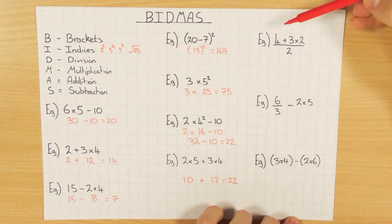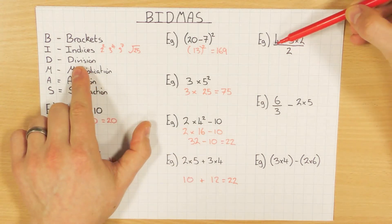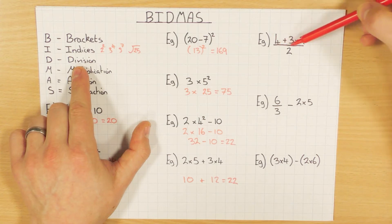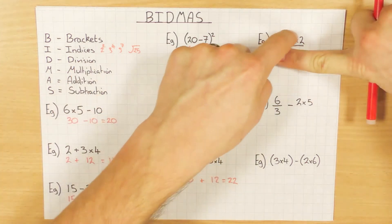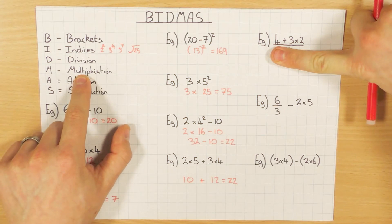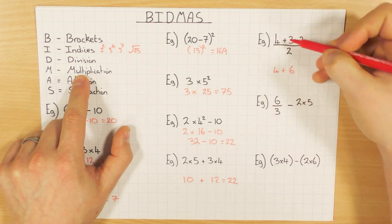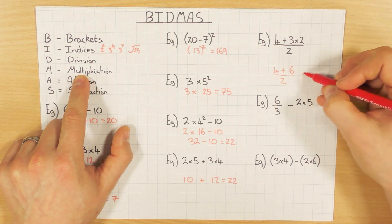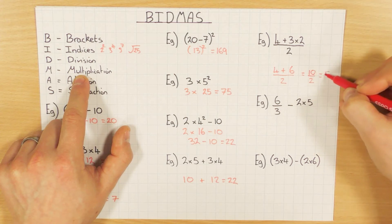This next one is interesting — we've got an addition, a multiplication, and a division. In theory we'd do division first, but I can't actually do it because I don't know what number is on top. So I ignore the divide by 2 for now. Multiplication comes first: 3 times 2 is 6, then add the 4 to get 10 divided by 2. Now it's easy — 10 divided by 2 is 5.